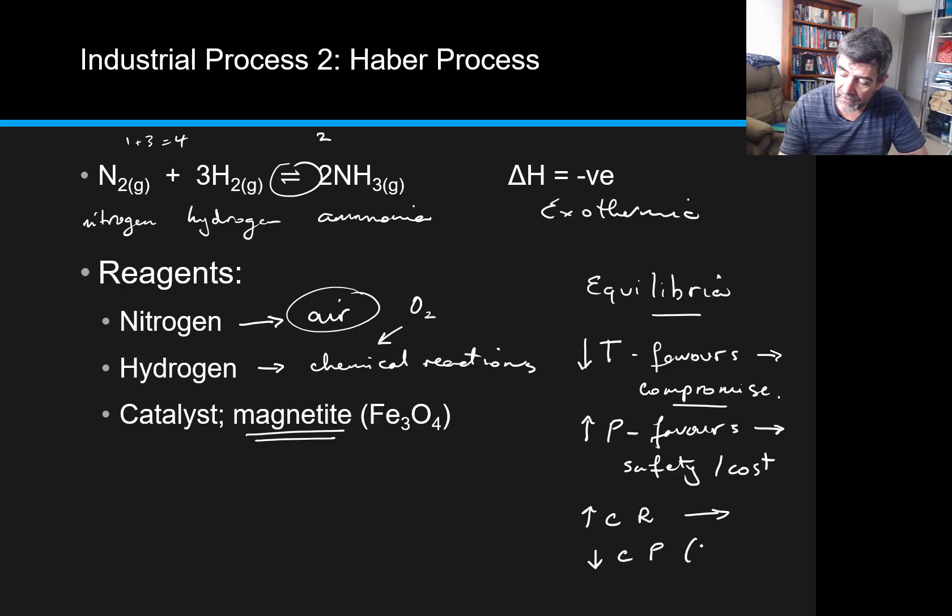We can also decrease the concentration of the product, and we can most easily do that by liquefying the ammonia. If we do that, then that is going to come out of the reaction vessel as a gas. It will liquefy because that's the highest boiling point of all three of these species. Therefore, we can withdraw it, decrease the concentration of ammonia, and drive that reaction to the right.